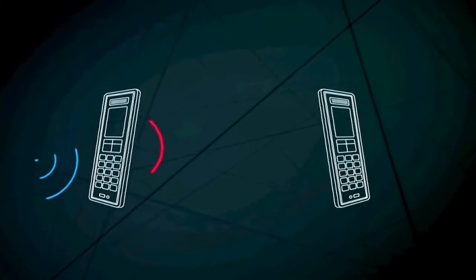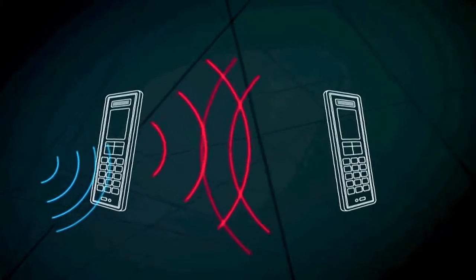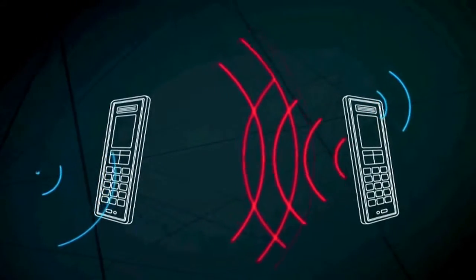Instead of wire, mobile phones use radio to send the signals. You can find out more about mobile phones in another section.